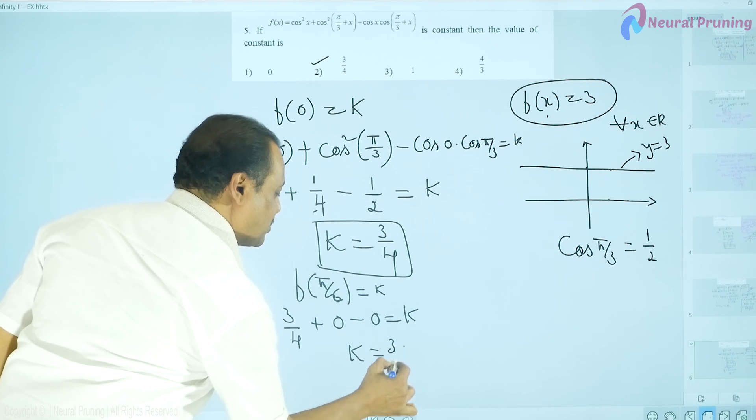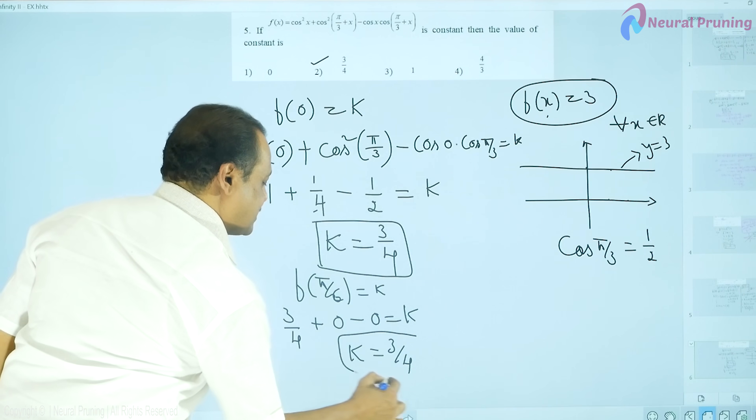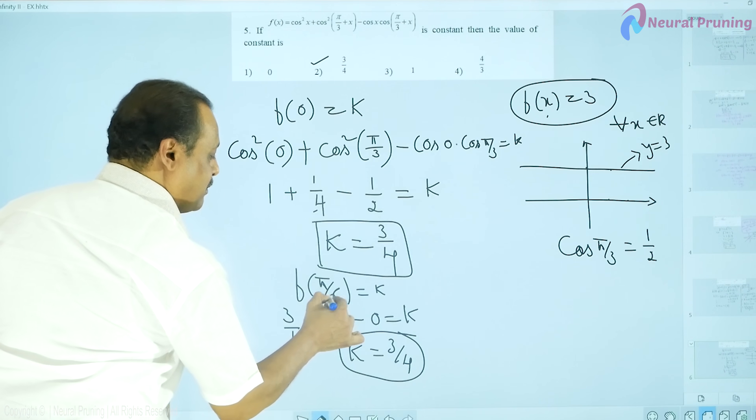Hence, k value, it is again equal to 3 by 4. So, same value is obtained even for pi by 6.